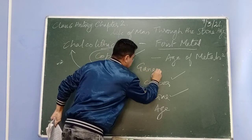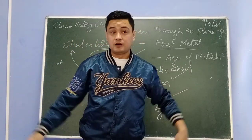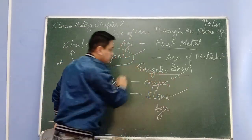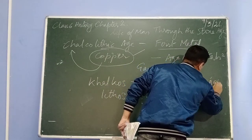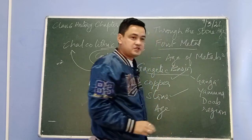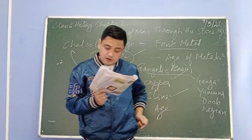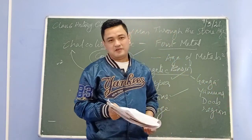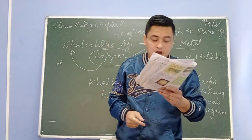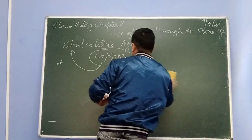The Gangetic basin is the place where the Ganga, Yamuna, and Brahmaputra rivers meet and intersect. The Gangetic basin is also known as the Ganga-Yamuna Doab region, or the Great Indian Plains. Chalcolithic tools have also been found in the Chotanagpur Plateau, which is found near the Bihar area. After the Chalcolithic age we move on to the Bronze Age.